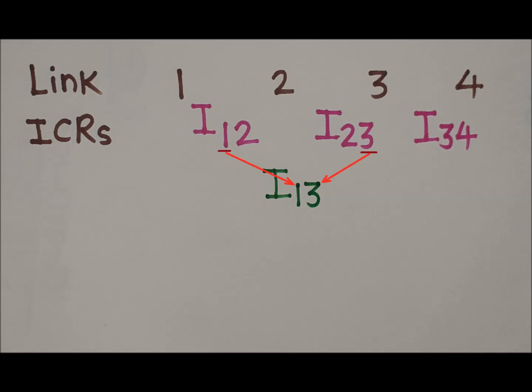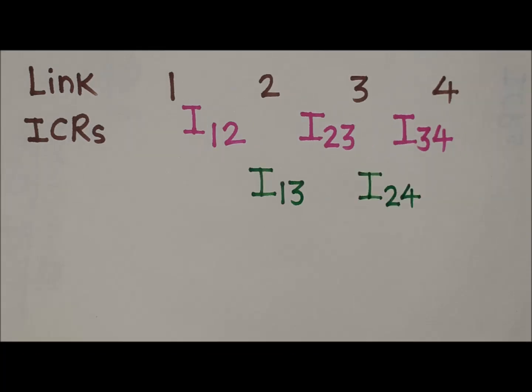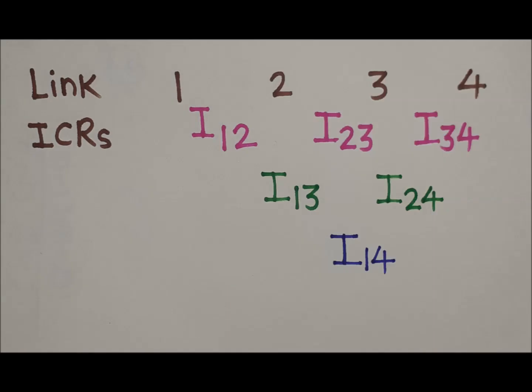This is how we write ICR I24. How is I24 written? The first digit of ICR I23 is 2, and the second digit of ICR I34 is 4. Similarly, this is how we write ICR I14. How is I14 written? The first digit of ICR I13 is 1, and the second digit of ICR I24 is 4.